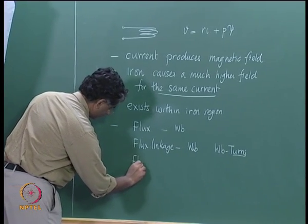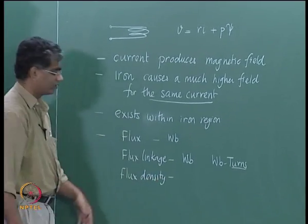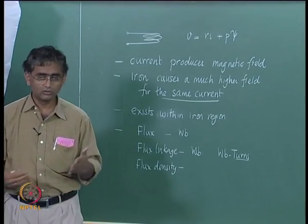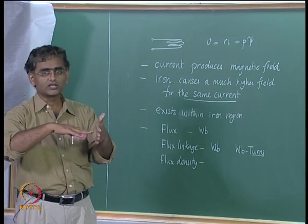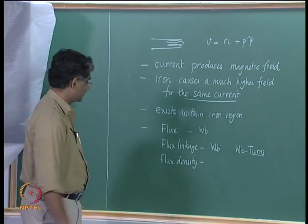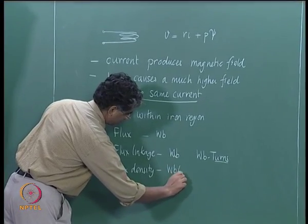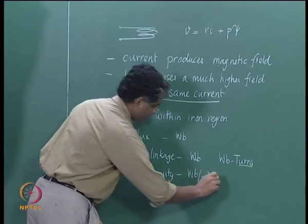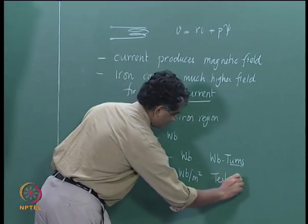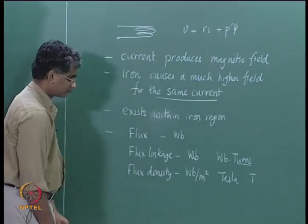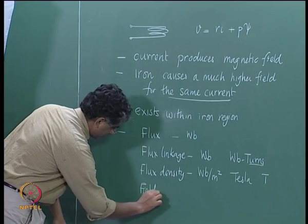Then you have flux density, which is the number of flux lines going through a given area. If you have flux lines going through an area, how many flux lines go through that area determines the flux density — measured as Weber per meter squared, also called Tesla, given the symbol T. Then you also have magnetic field intensity.